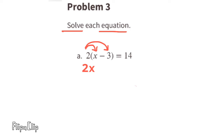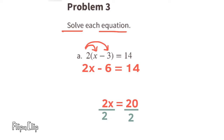Part a: 2 times (x minus 3) equals 14. Using the distributive property: 2 times x is 2x, and 2 times negative 3 is negative 6. So 2x minus 6 equals 14. Add 6 to both sides, then divide both sides by 2. x equals 10.